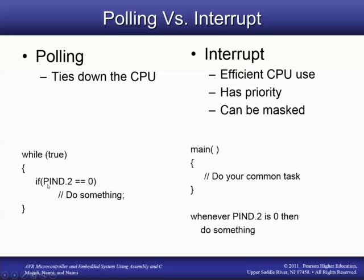We've done this in examples with the timer interrupt flags. We had it where instead of 'if', we said 'while' the flag was zero, then just sit here. One problem with polling is it ties down the central processing unit — it ties down the microprocessor because it can't be doing anything else while it's looking at that bit or flag.